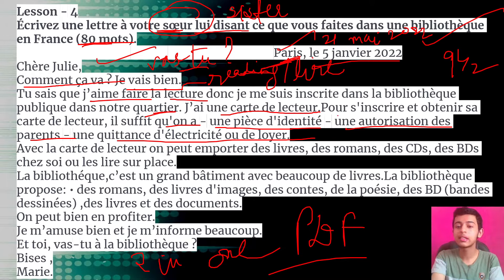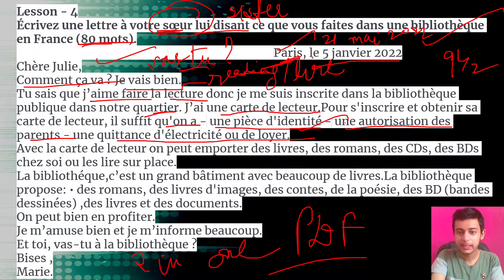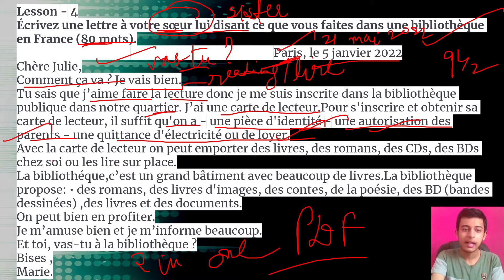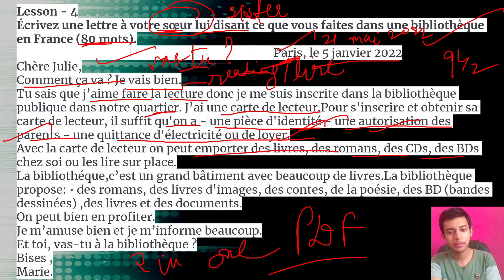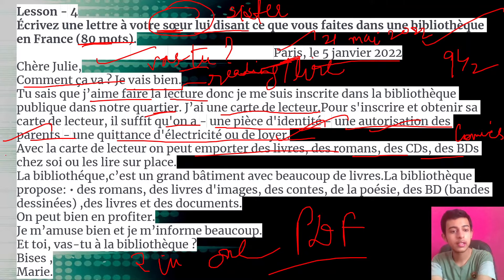For getting admission — inscribing or obtaining your reading card — it is important that one should have a piece of identity. Identity copies, also permission from parents, and an electricity bill or rent bill. With the reading card, one can borrow books, novels, CDs, and comics — 'BD' is 'bande dessinée' which means comics.